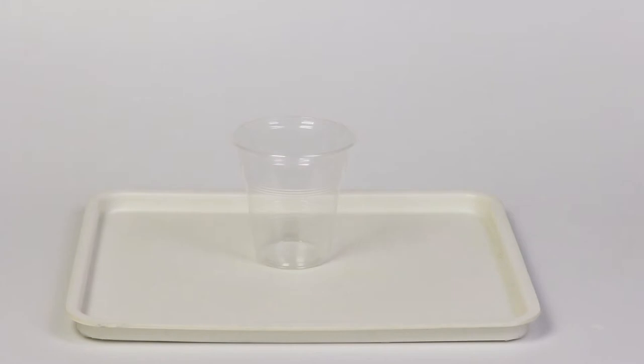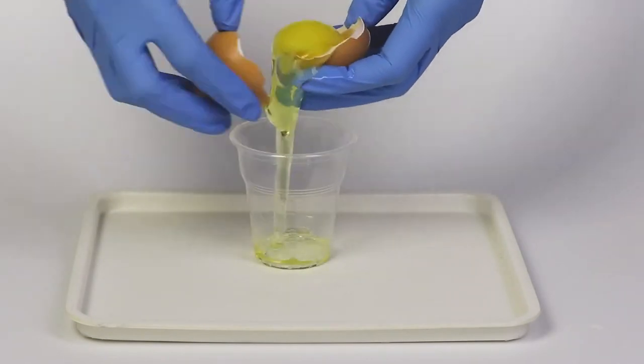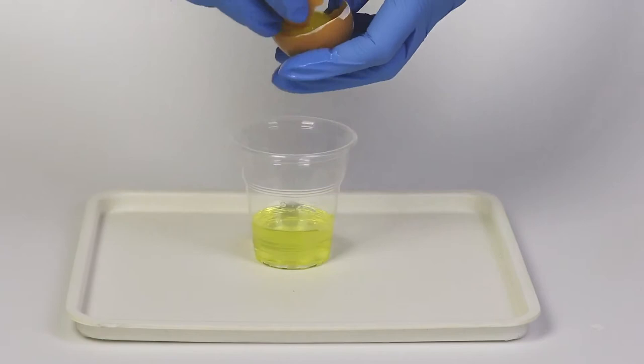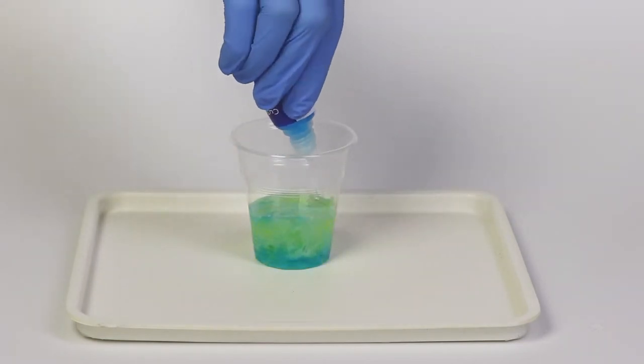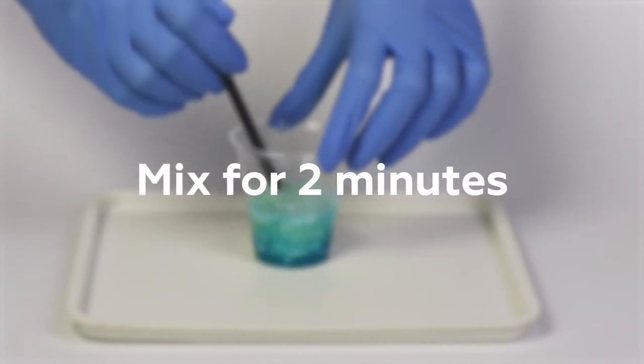First, you must crack the egg and separate the yolk from the egg white. Now take a disposable cup and pour the egg white into it. Add one bottle of copper sulfate solution to the cup and carefully stir the mixture for two minutes.